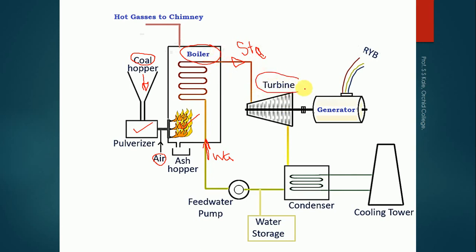That steam will go to the turbine. The turbine is a device which generates mechanical energy as output. There are various types of turbines — hydraulic, gas, and steam turbine. The type depends on the input energy. If the input is water, it's a hydraulic turbine; if gas, a gas turbine; and if steam, a steam turbine. Currently we are using a steam turbine, which generates mechanical energy.